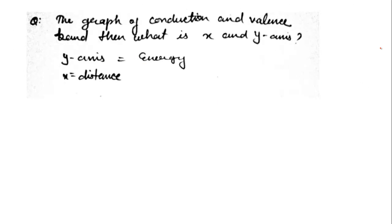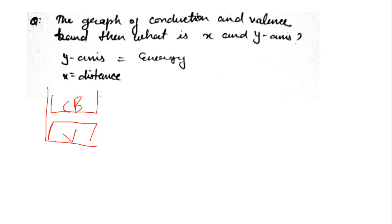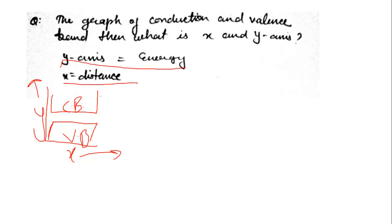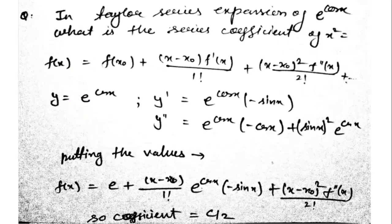The next question was a graph of conduction band and valence band — what is X and Y? The question is about a graph showing a conduction band and a valence band. On such a graph, the Y-axis always represents energy and the X-axis always represents distance. This was again an easy question.